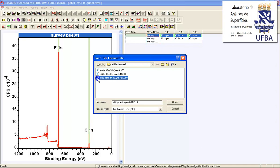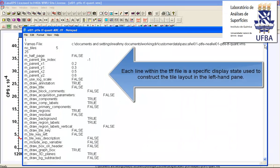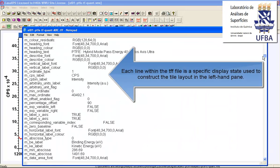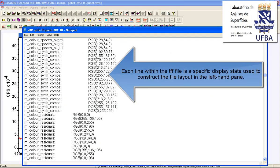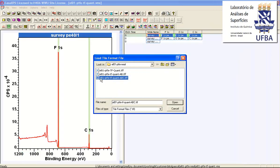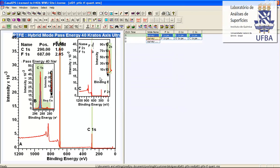So each one of these has, if I open it in notepad, a list of ASCII information that will recreate the display as I had it when I saved this file.